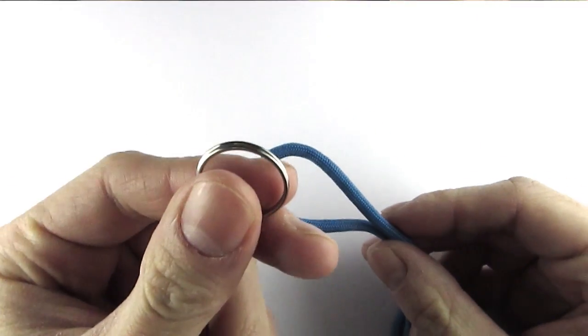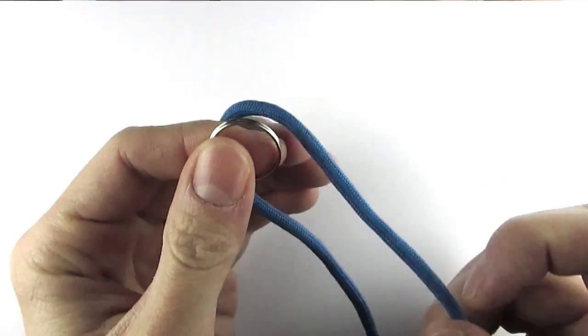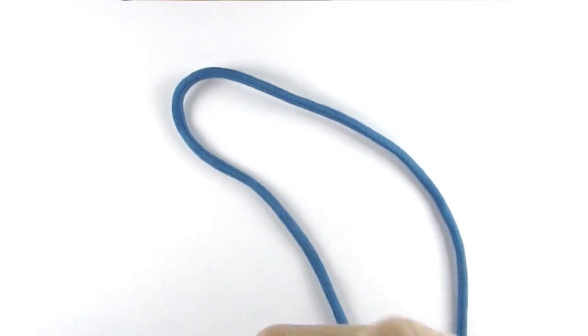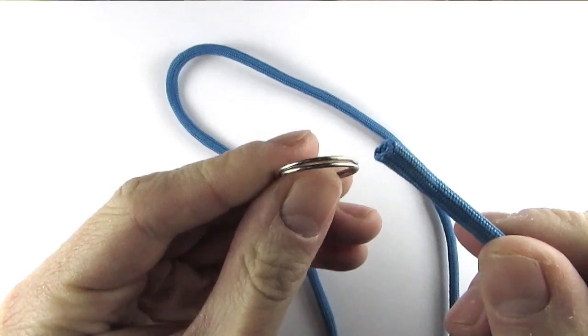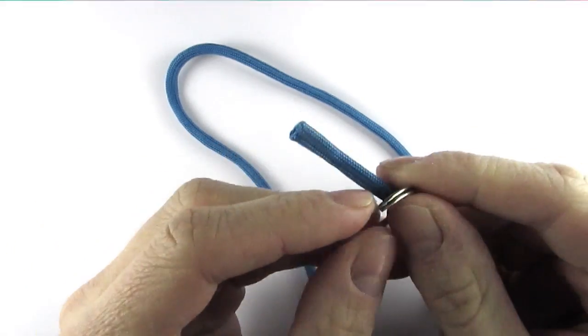Now I'm going to feed an end of paracord through the ring like this and place it at the middle point of the cord.